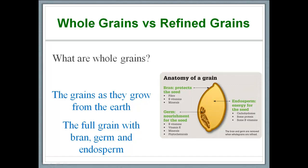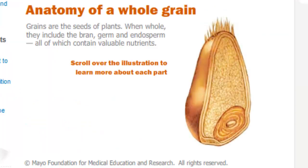So what we are going to do now is run a simulation where we are going to split open the whole grain into two halves and then pinpoint the location of the three components — the bran, the germ, and the endosperm — accurately. So here we go. What you are looking at now is one half of the whole grain that has been split open into two halves.